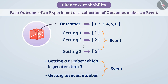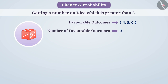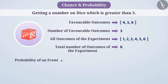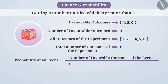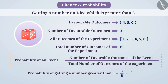Let's talk about the event of getting a number greater than 3. Here, favorable outcomes are 4, 5, and 6. In this way, there are 3 favorable outcomes for this event. But any number 1, 2, 3, 4, 5, or 6 can come up in this experiment, so the total outcomes are 6. The probability of an event is the ratio of the number of favorable outcomes to the total number of outcomes in the experiment. Here, the probability of getting a number greater than 3 will be 3 by 6, which equals 1 by 2.